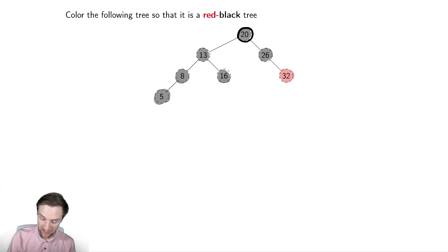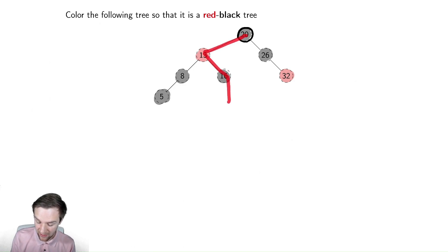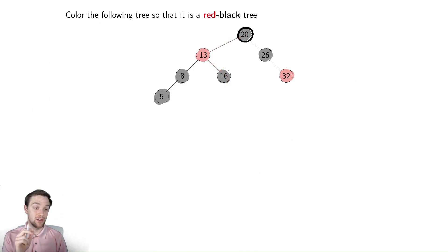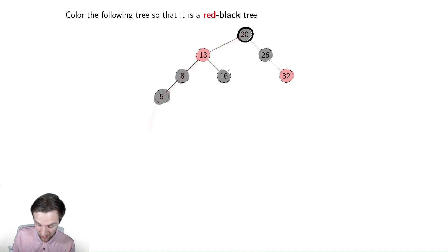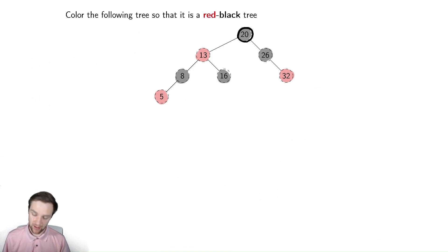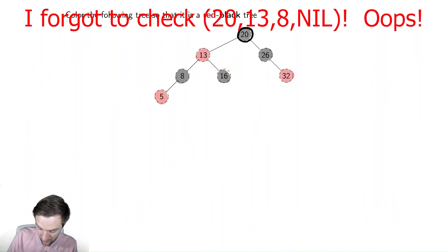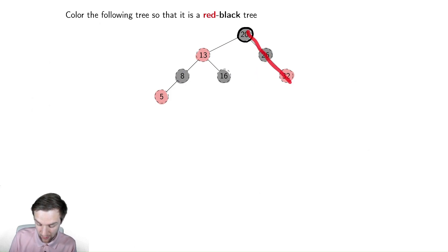Now let's apply the same reasoning on the left. The path 20, 13, 16, nil has too many black nodes if 13 is black. So what if I colored 13 to be red? Now 20, 13, 16, nil all have two black nodes — good. But 20, 13, 8, 5, nil has far too many. I can't color 8 to be red because 13 is red, so I must color 5 to be red. Now checking every single path: this one has two, this one has two, this one has two, that one has two. Seems like we're good.